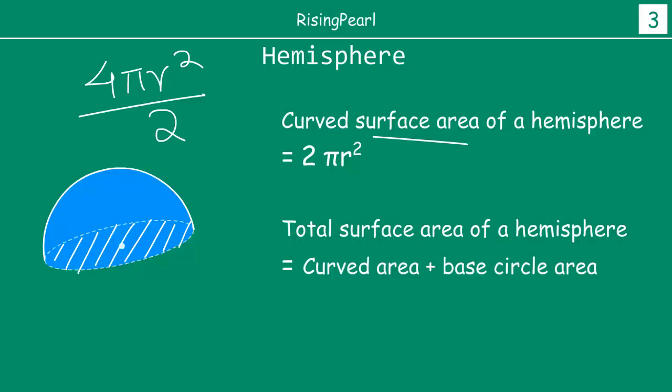So the total surface area will not only include the curved surface area but will also include the top part. So it will be the curved area plus the top or the base circle area which will be the curved area is 2πr². And what is the area of this circle? Well, we know that this radius is r. So the area of this circle is πr². So it will be 2πr² which is the curved surface area plus πr² which is the area of the circle, top or the bottom circle. So 2πr² plus πr² equals 3πr².